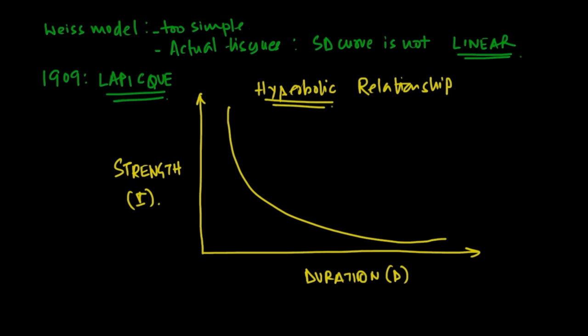In 1909, Lapeck found that the relationship between these two variables was hyperbolic. In his experiments, when he applied very small current of infinite duration, he could stimulate the nerve due to slow accumulation of charge exceeding the leaky channels.